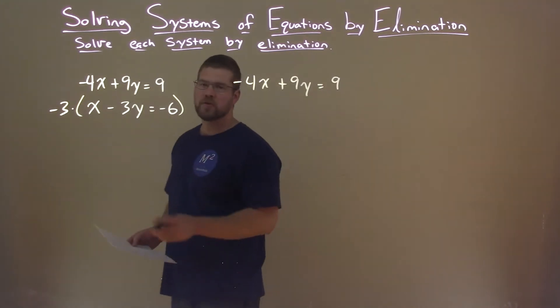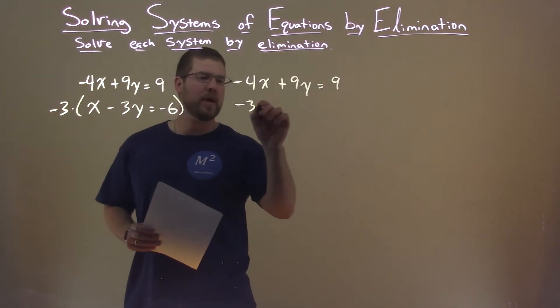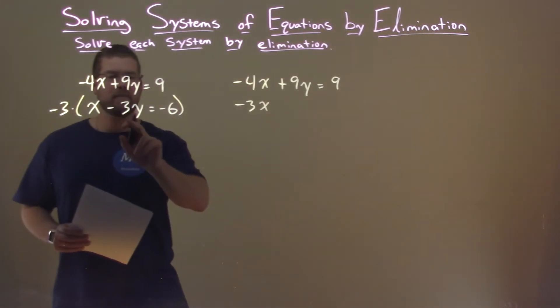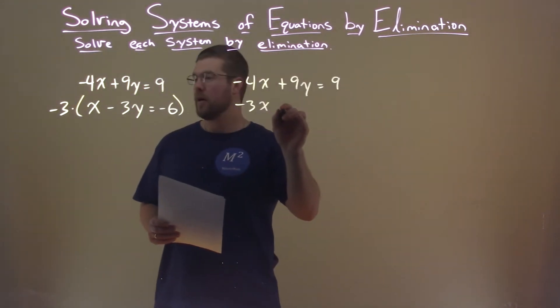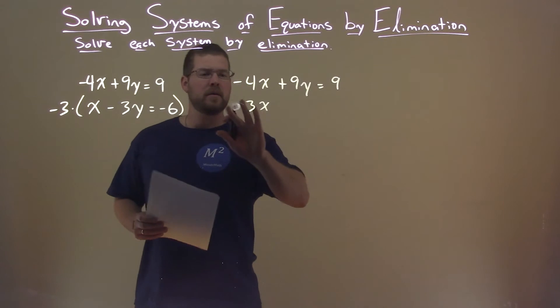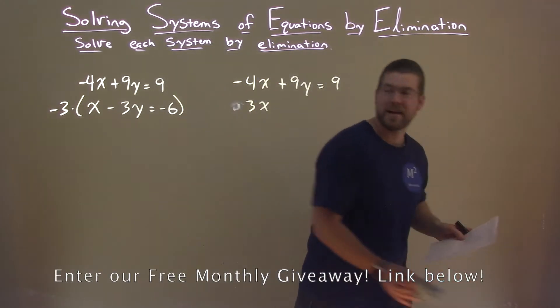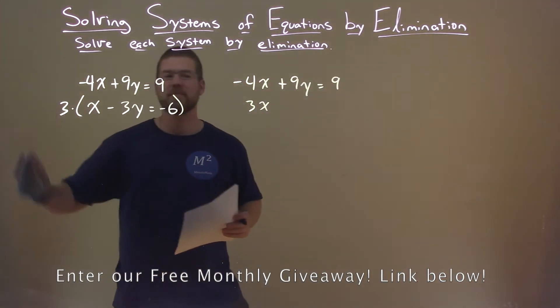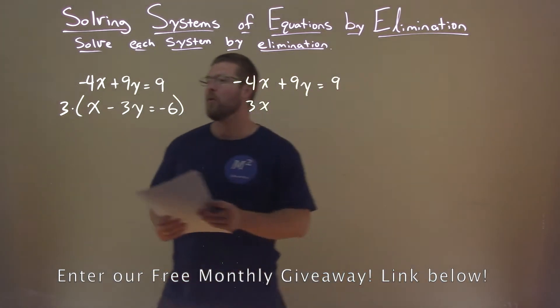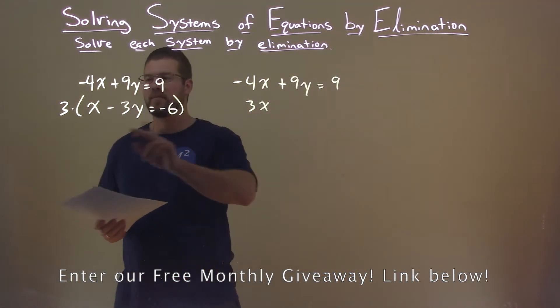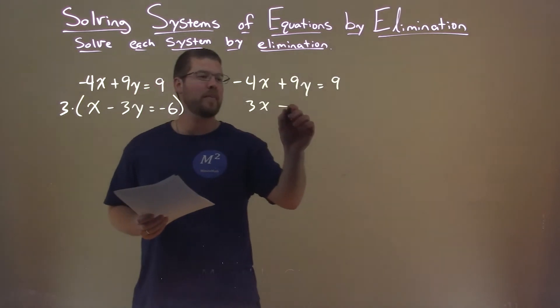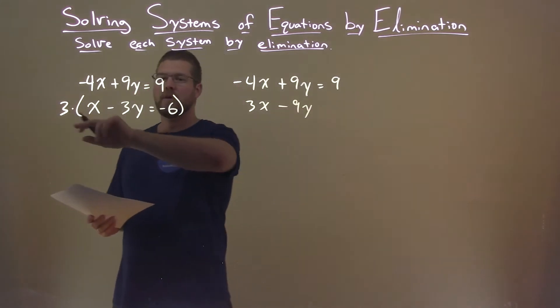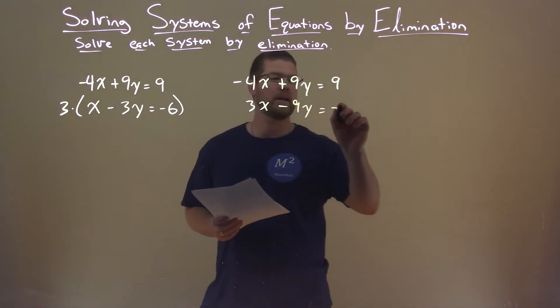Second equation now, we distribute the minus 3, minus 3x... oof, why did I do that? It shouldn't be a minus 3. Catching myself right here. Let's go with a positive 3, and you'll see why in a second. Multiply 3 times x is 3x. 3 times a negative 3y is minus 9y. 3 times a minus 6 is minus 18. Got ahead of myself.